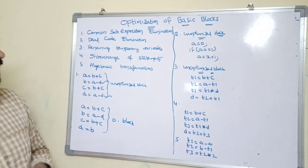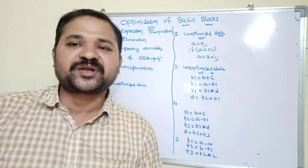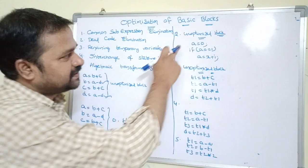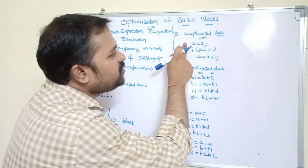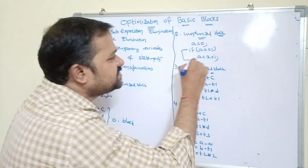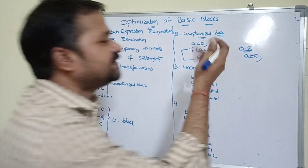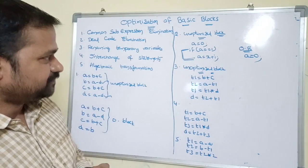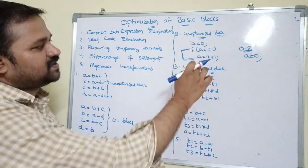The second approach is dead code elimination — it targets statements which are never executed, or whose output is never used. Consider this example: a = 0, then if a² = 1, then a = x + i. Since a is always zero, a² = 0, so the condition 0² = 1 is always false. This block will never execute, so we can eliminate those two statements. The optimized block contains only the first statement a = 0.